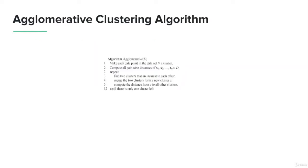The mathematical notation and pseudocode of the agglomerative clustering algorithm is shown here. The repeat-until structure and if conditions are basically loops — it's just one way to write an algorithm.